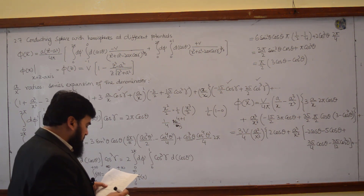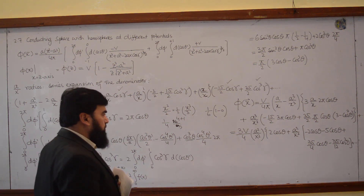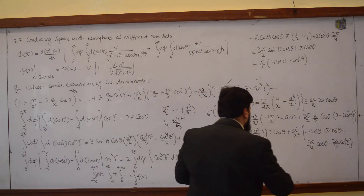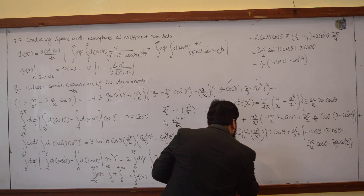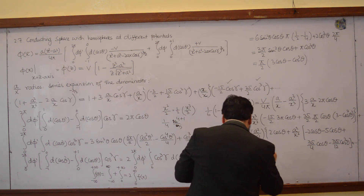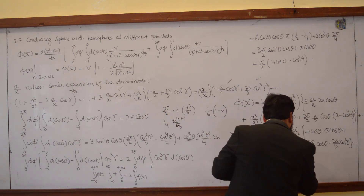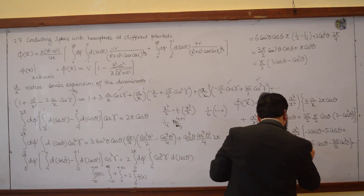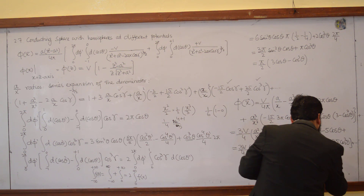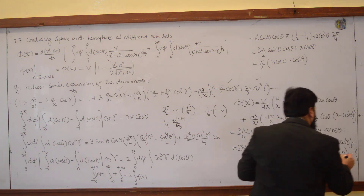There are some more terms in this series, but we are reducing the number of terms and giving it a shape. Finally, this comes to a final form: 3v/4 times a²/x² cosθ minus 7 over 12 a²/x², and 5 over 2 cos³θ minus 3 over 2 cosθ, plus some more terms, and then close.